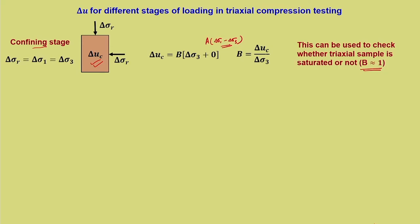Substituting into Skempton's equation: delta U_c equals B times delta sigma_3 plus A times (delta sigma_1 minus delta sigma_3). This gives delta U_c by delta sigma_3 equals B. This is where B is used to check whether the triaxial sample is saturated. For a fully saturated condition, B equals 1, meaning whatever increase in delta sigma_3 is applied will be fully reflected by delta U_c. If air is present, the load is partitioned between pore water pressure and volume change from air expulsion, so delta U_c is less than delta sigma_3. Anything above 0.9 to 0.95 can still be considered a saturated sample.